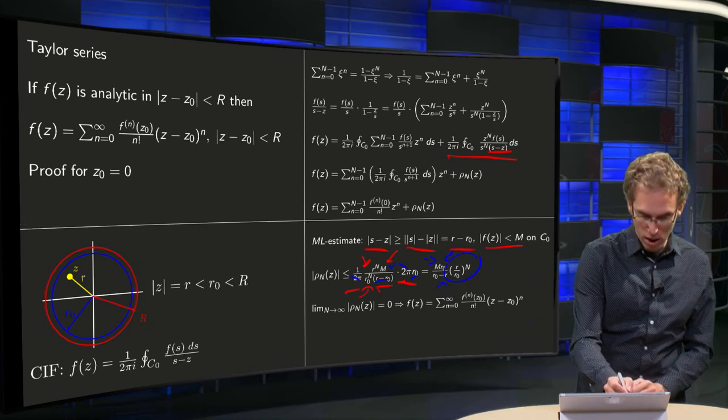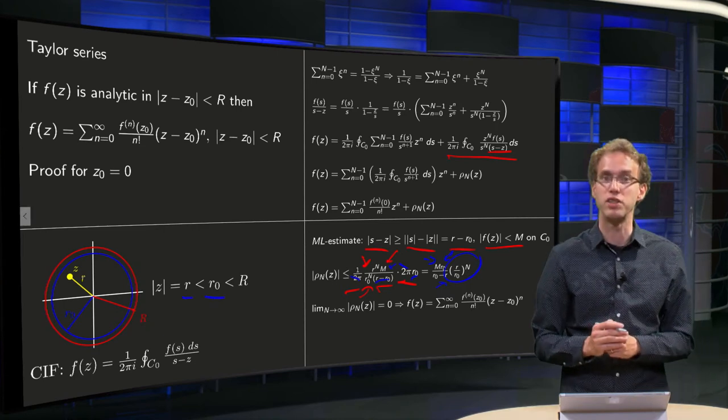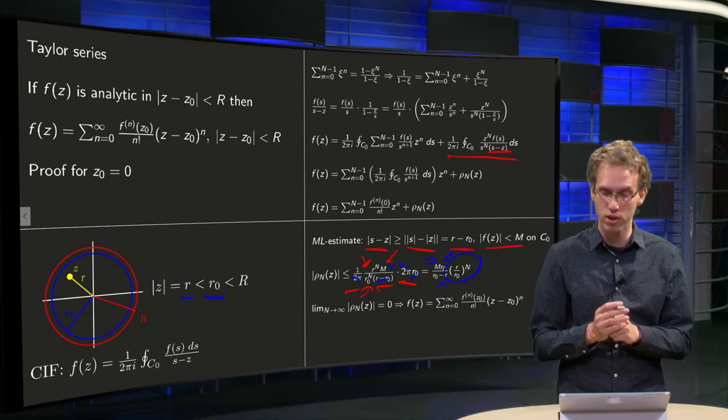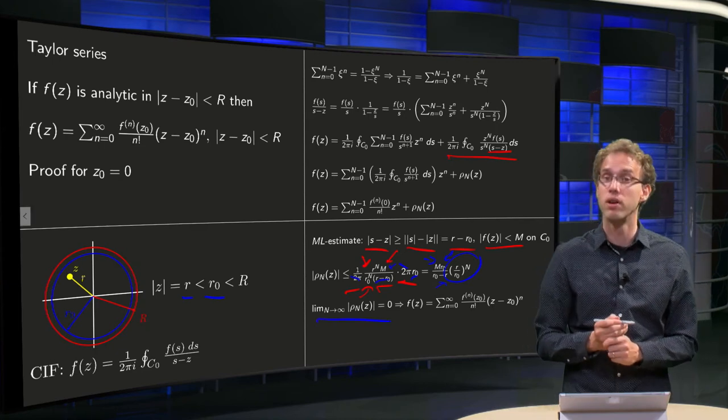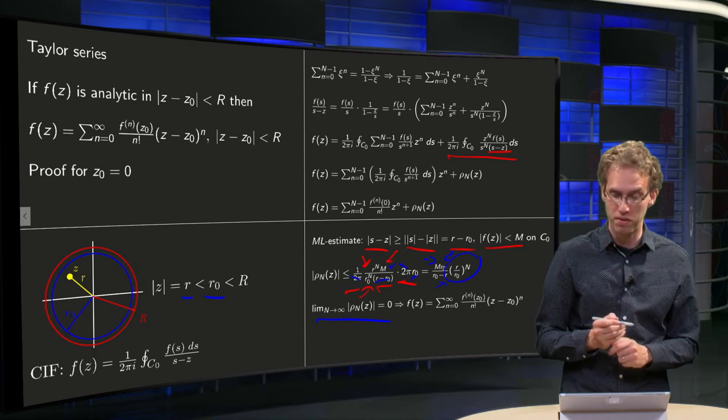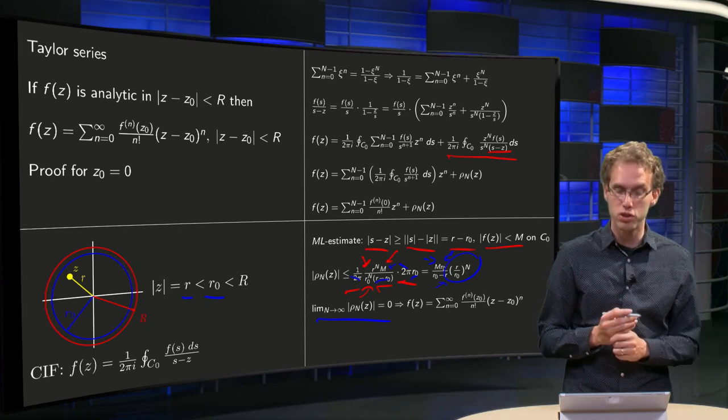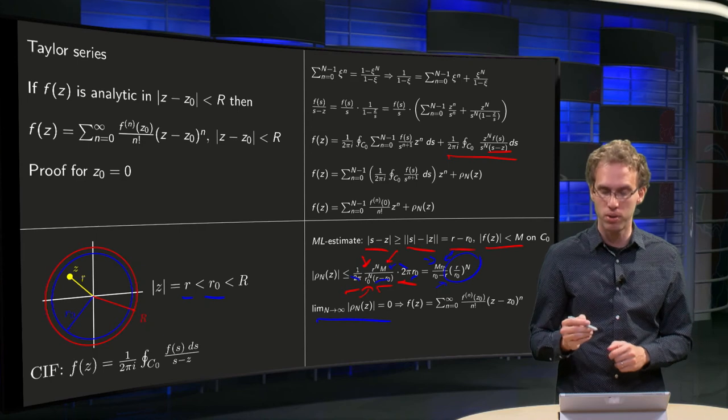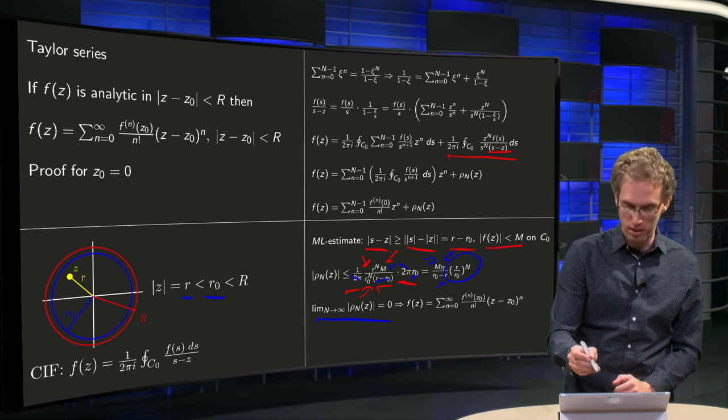Now r is smaller than r₀, so r over r₀ is smaller than 1. So if we take the limit capital N to infinity, then the modulus of ρN will be zero. So if we take the limit capital N to infinity on both sides over here.